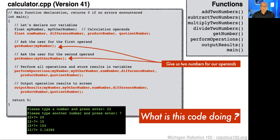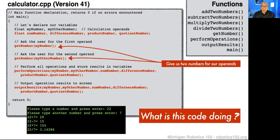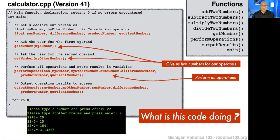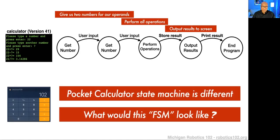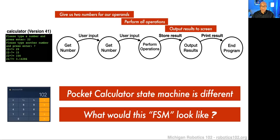The first thing we do is ask for two numbers — we call the get_number function twice. Then we take those two numbers and perform all our arithmetic operations to get their sum, difference, product, and quotient. Then we output the results to the screen. If we turned this flow of computation into a finite state machine, our program starts in the state where it has to get a number, user input comes in, then we get another number, perform the operations, store the result, output results, print the result, and then end the program.